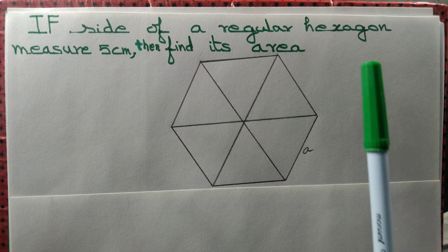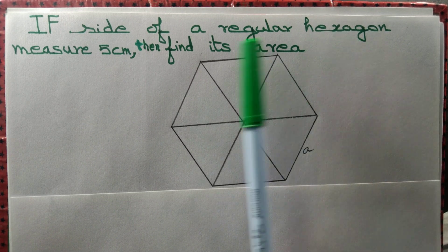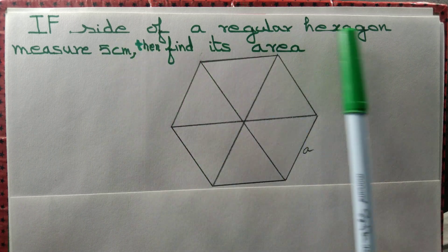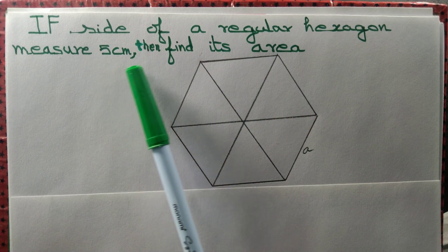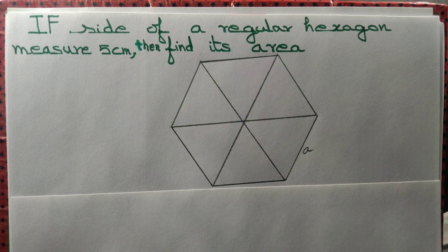We have a question whereby a side of a regular hexagon measures 5 cm, and we want to find the area of the regular hexagon.